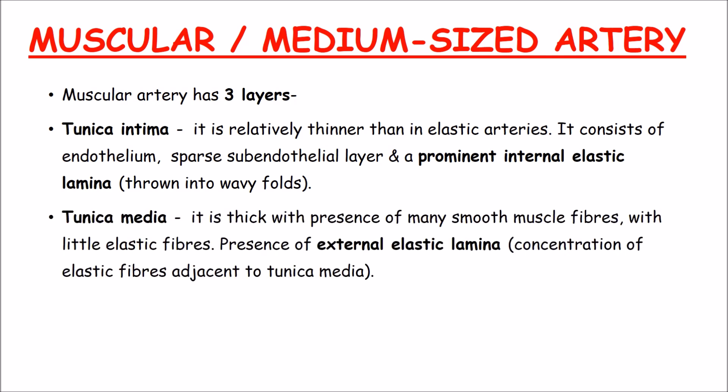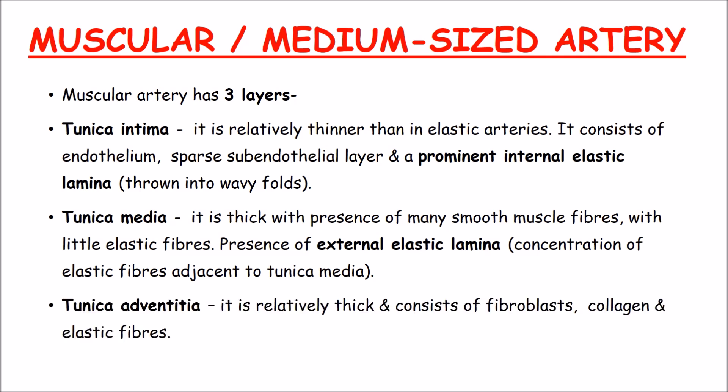The tunica media is thick with many smooth muscle fibres and very little elastic fibres. There is an external elastic lamina with a high concentration of elastic fibres adjacent to the tunica media. The tunica adventitia is relatively thick and consists of fibroblasts, collagen, and elastic fibres.